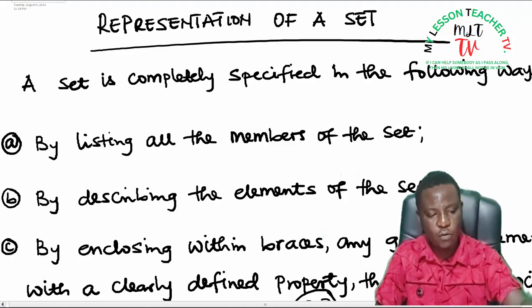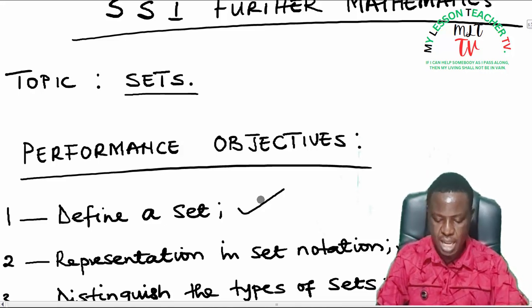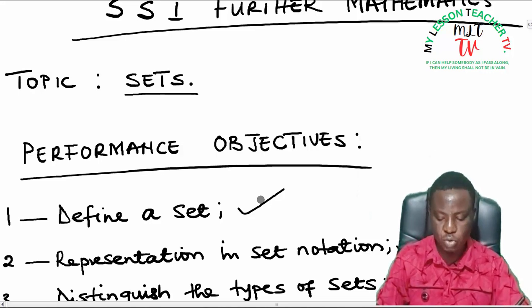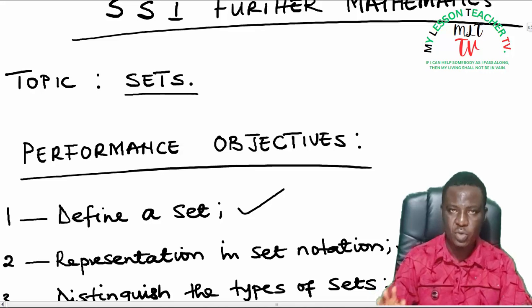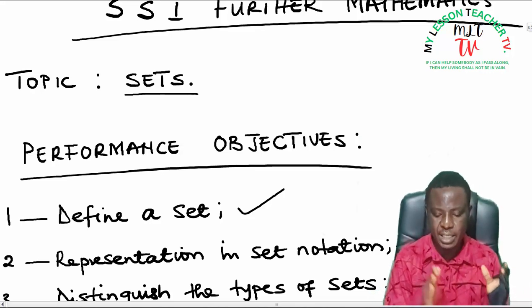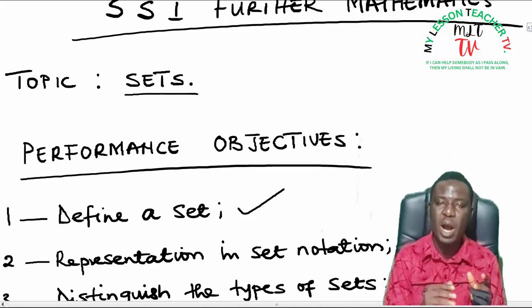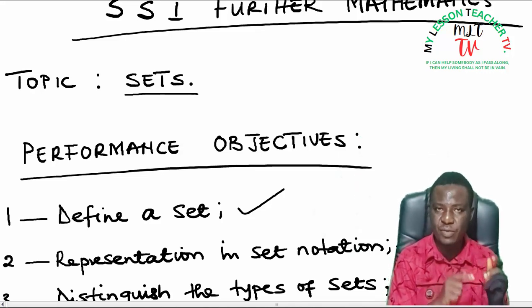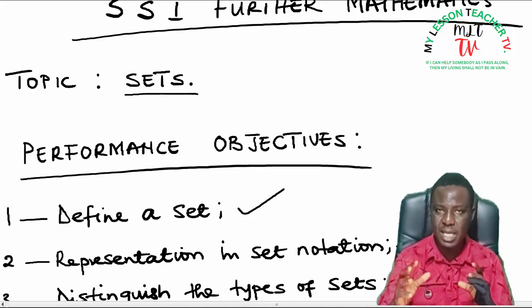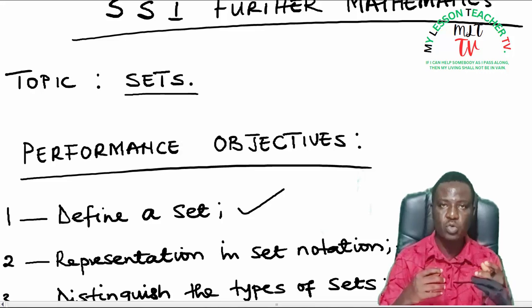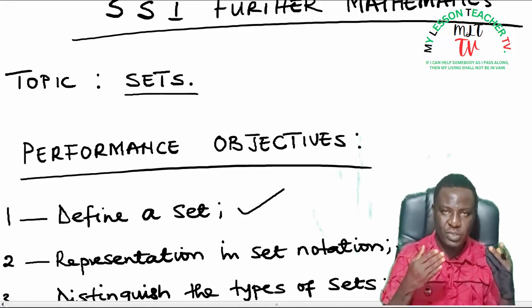That brings us to the end of today's class. In today's class, we have been able to define a set as well as represent set in set notation. We define a set as basically a collection of clearly defined objects. So any group of objects that is clearly defined is said to be a set. And we say in representation of a set, sets are represented using capital letters, while members of the set, which refer to as the elements of the set, can be represented using small letters. These are ways you can denote a set as well as elements of the set. And I showed you how to write it: that a belongs to a set X or b is not an element of set X.